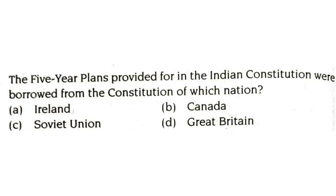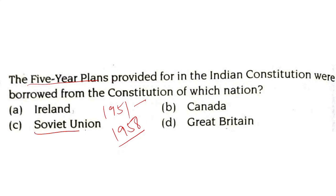The five-year plans provided for in the Indian constitution were borrowed from the constitution of which nation — Ireland, Canada, Soviet Union, or Great Britain? The first five-year plan started in 1951 and lasted till 1956. This feature was borrowed from the Soviet Union, that is the USSR.